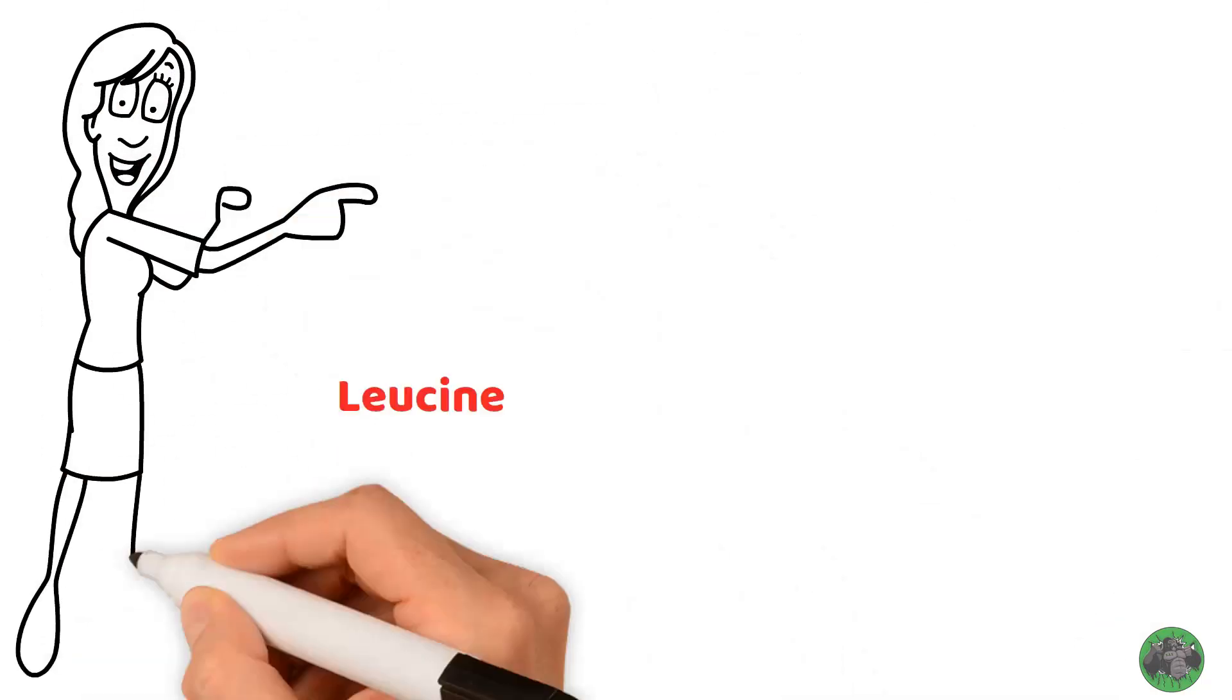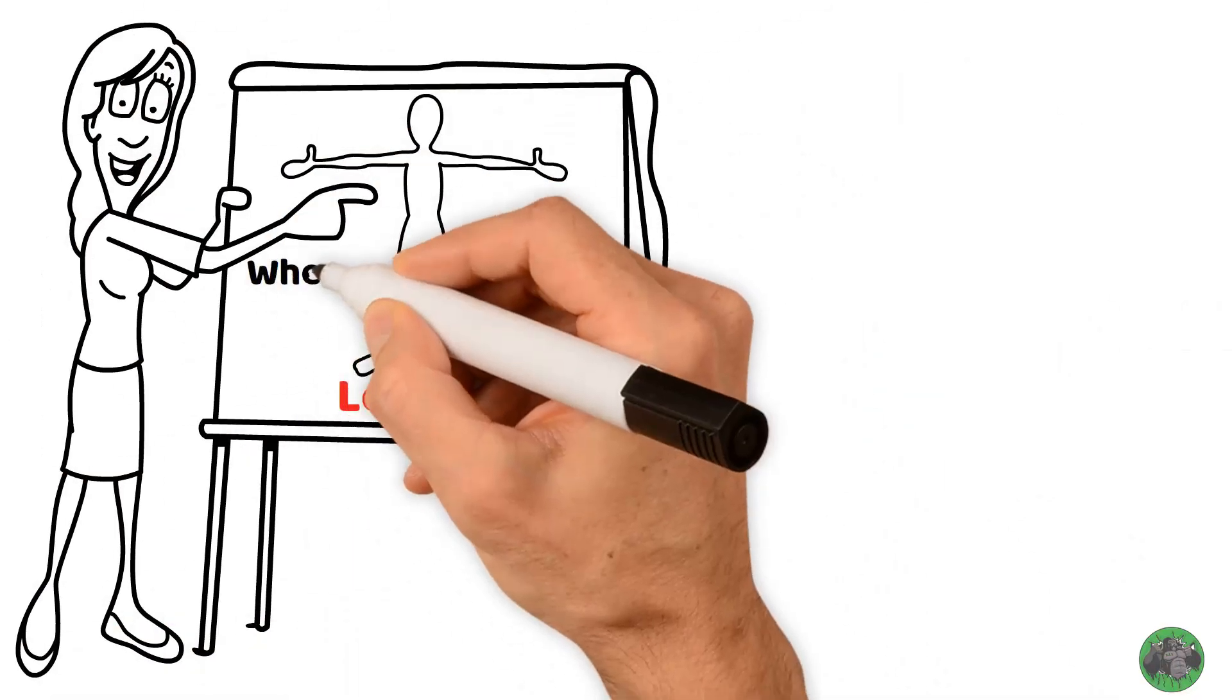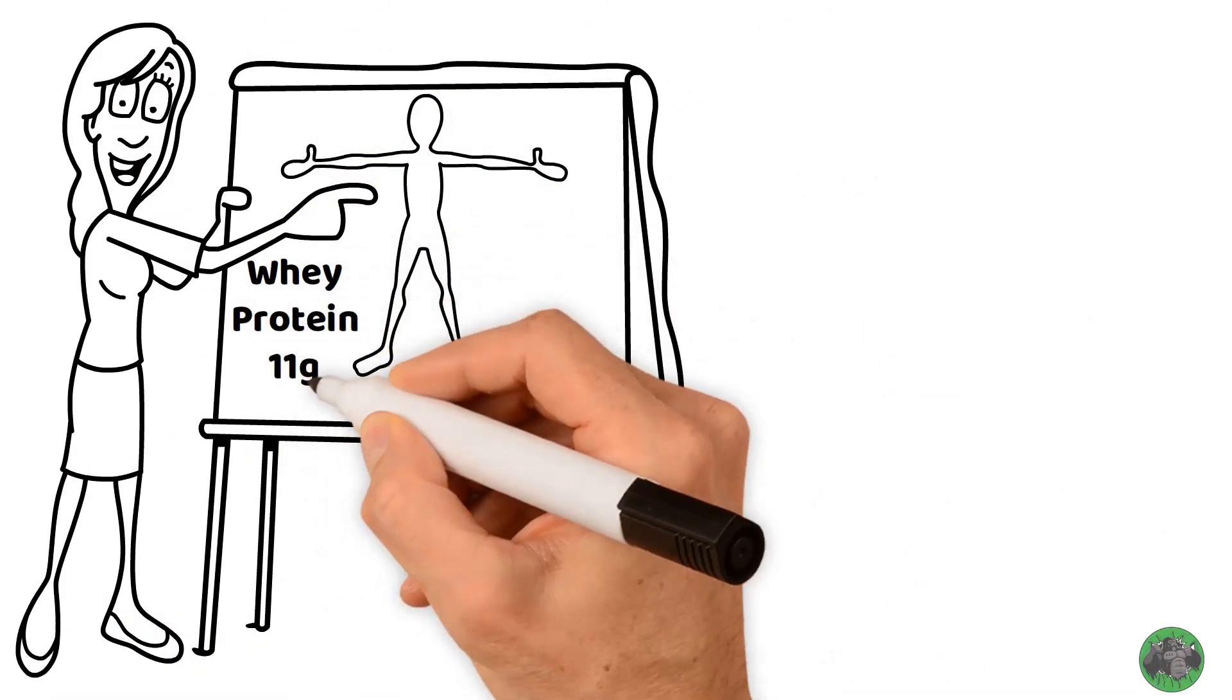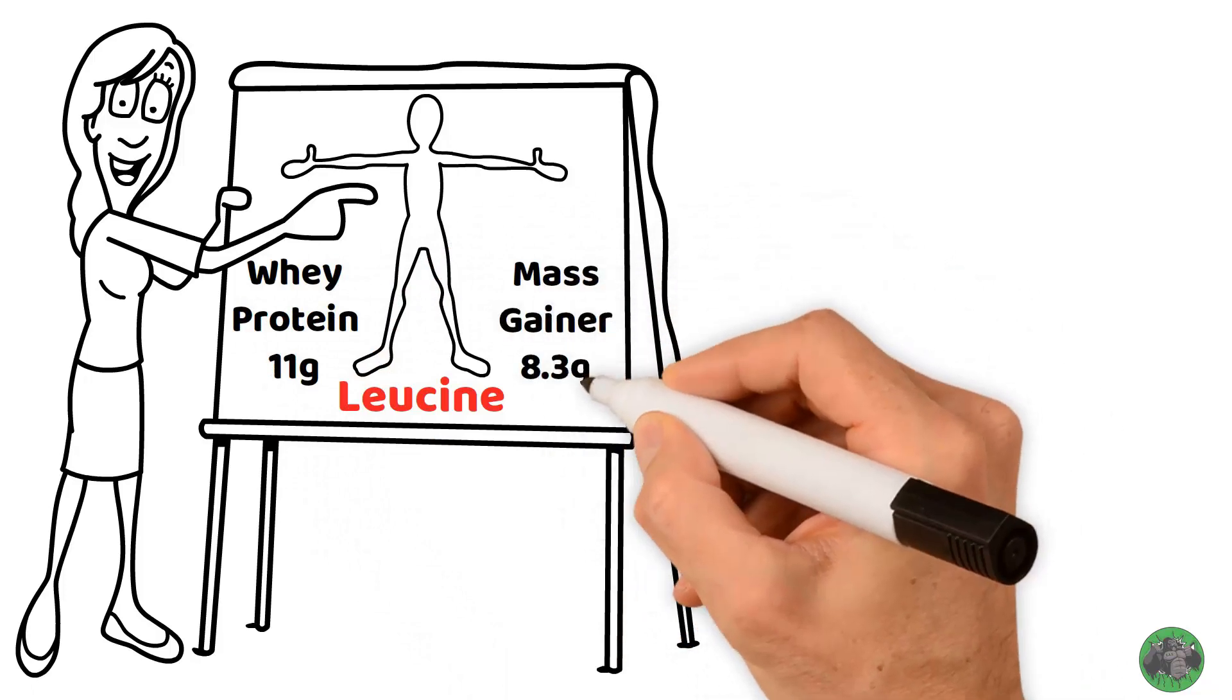Leucine is the most important BCAA in muscle protein synthesis. Whey protein has 11 grams while the mass gainer has only 8.3 grams.